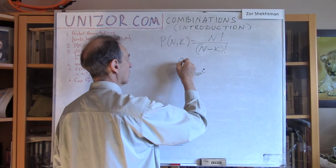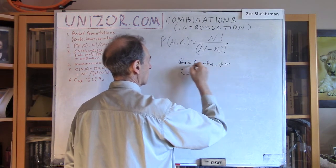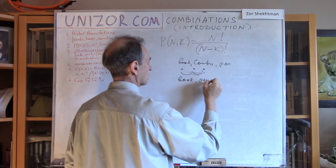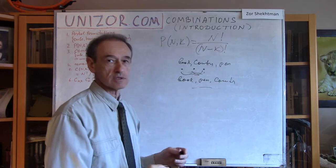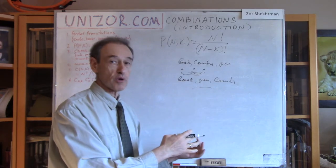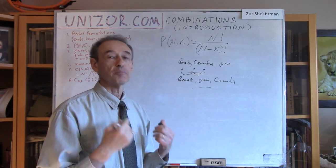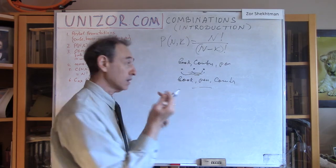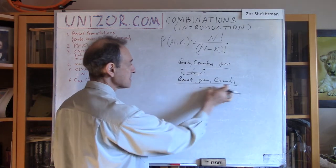For example: book, country, and pen — and book, pen, and country — and all other permutations of these three all constitute exactly the same combination. Different partial permutations, but the same combination. So, how many of these different partial permutations are composed into one combination? The number is as many permutations within this subset as we have. This is a subset of three elements, so we have three factorial different permutations, which we count as one.